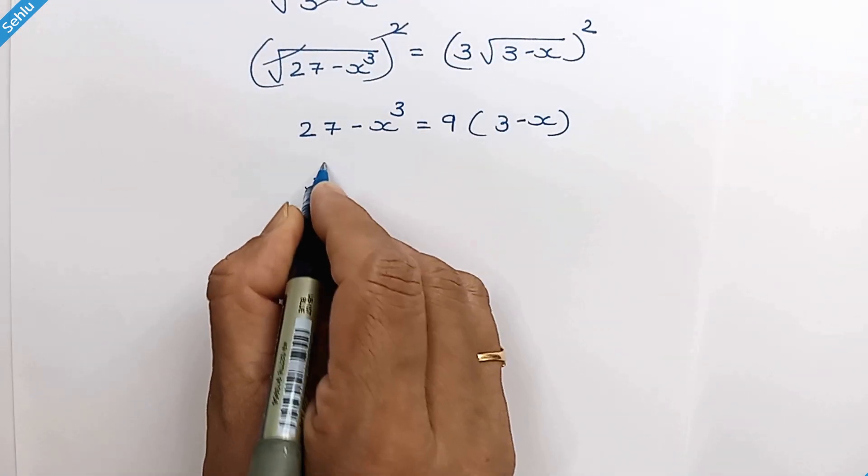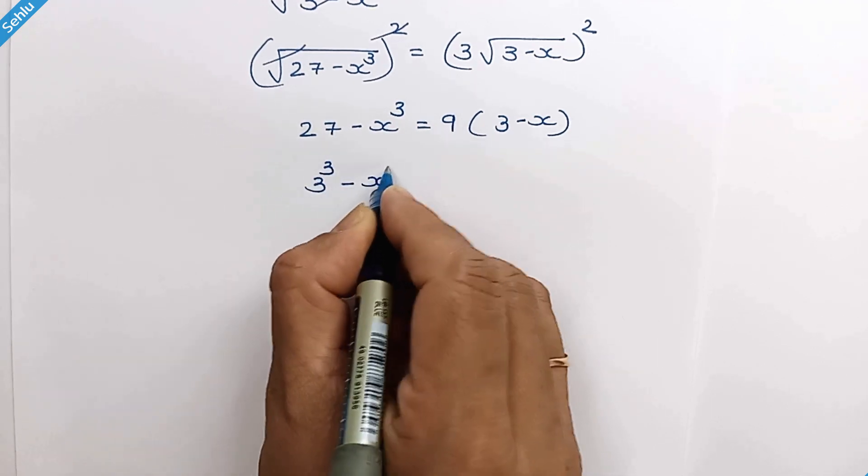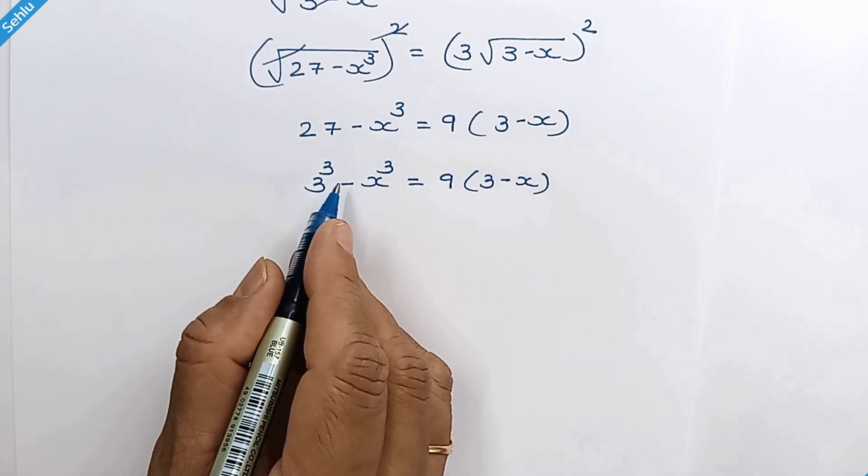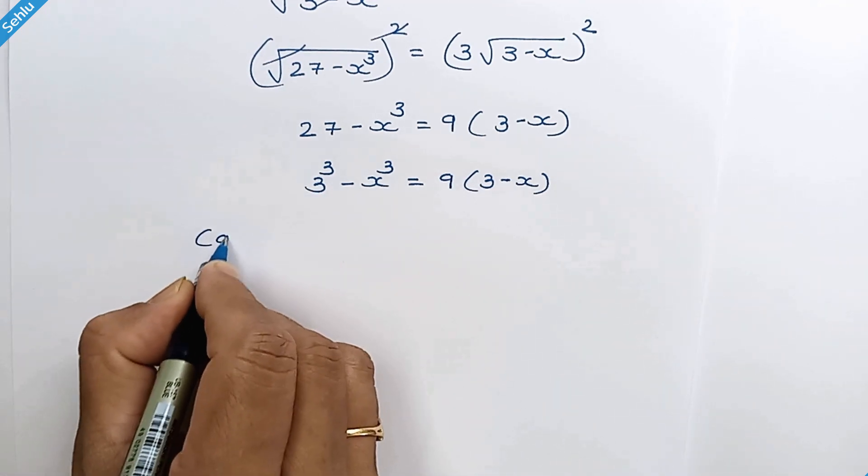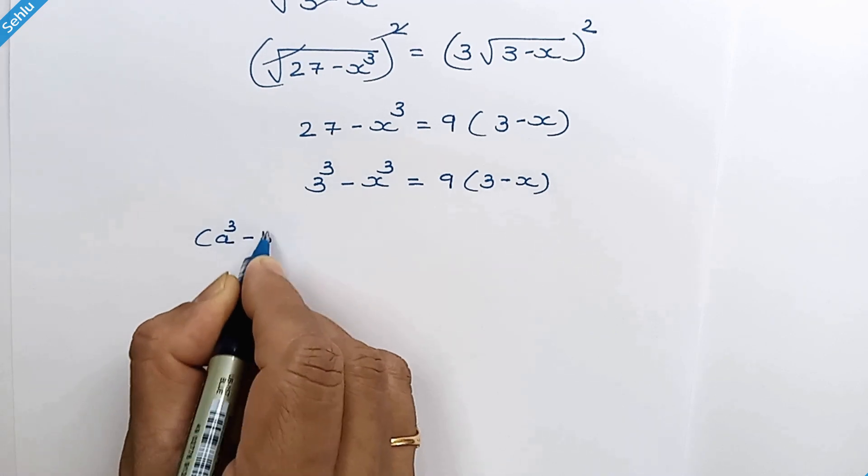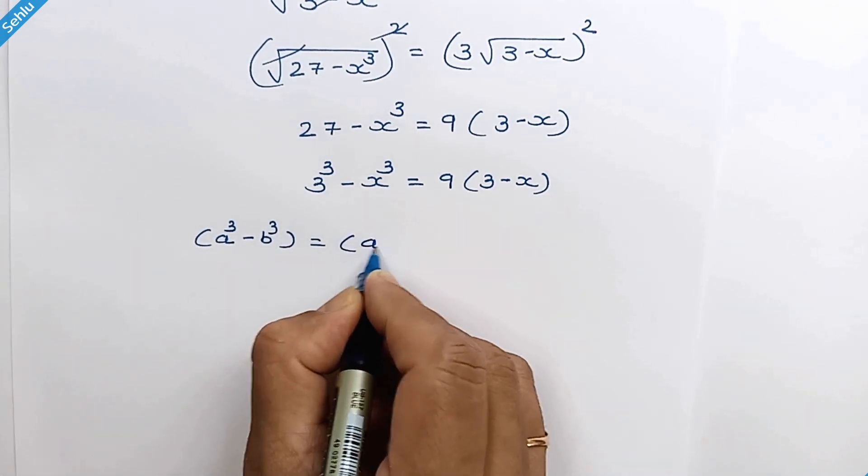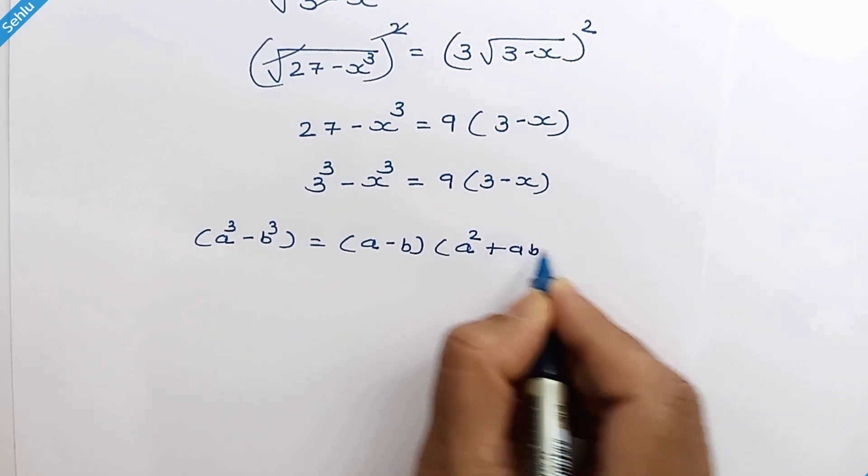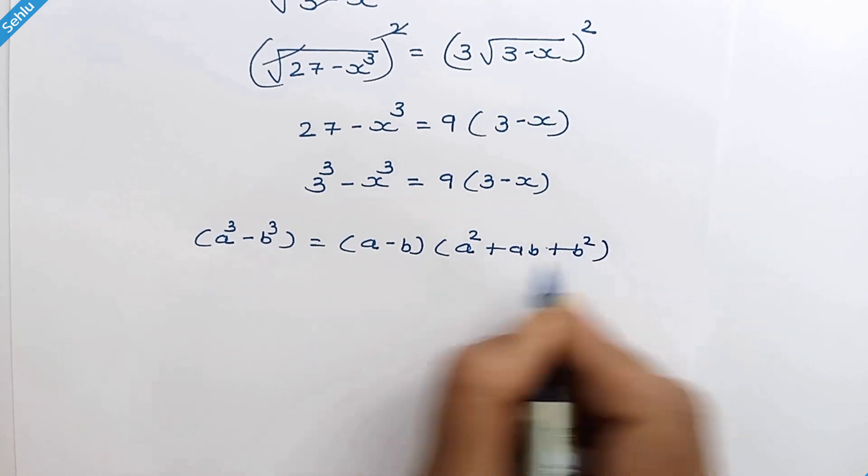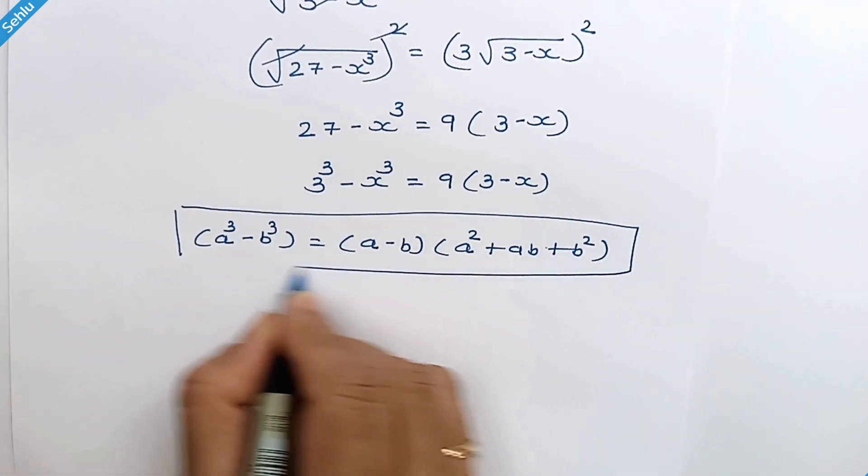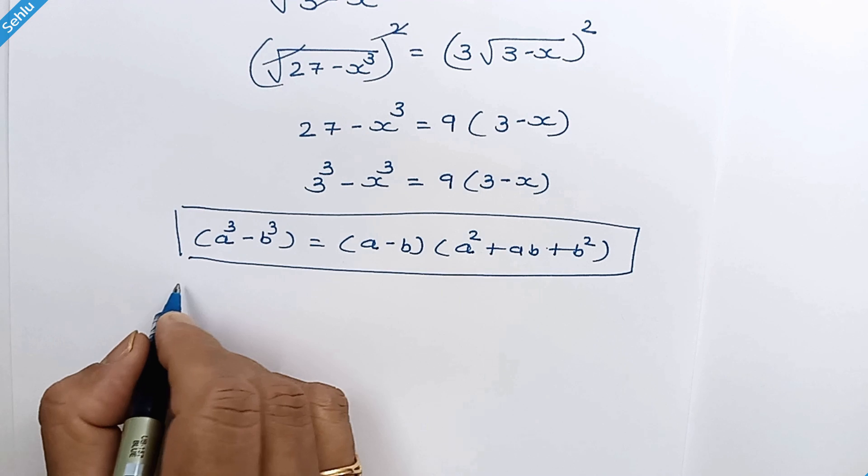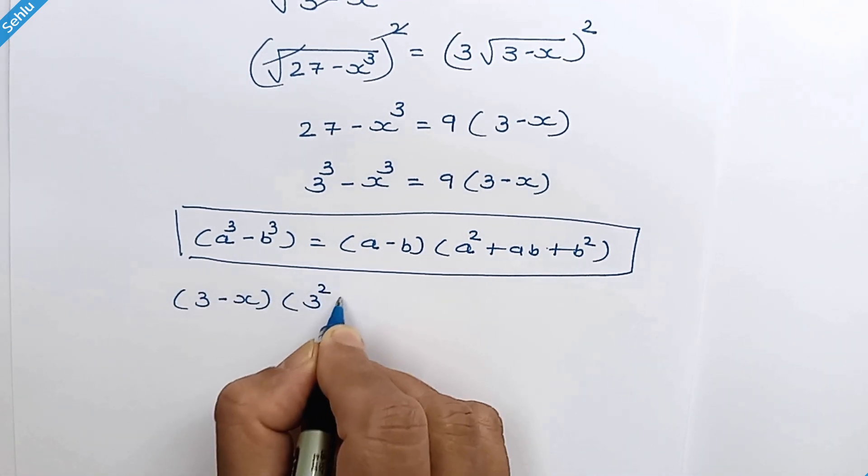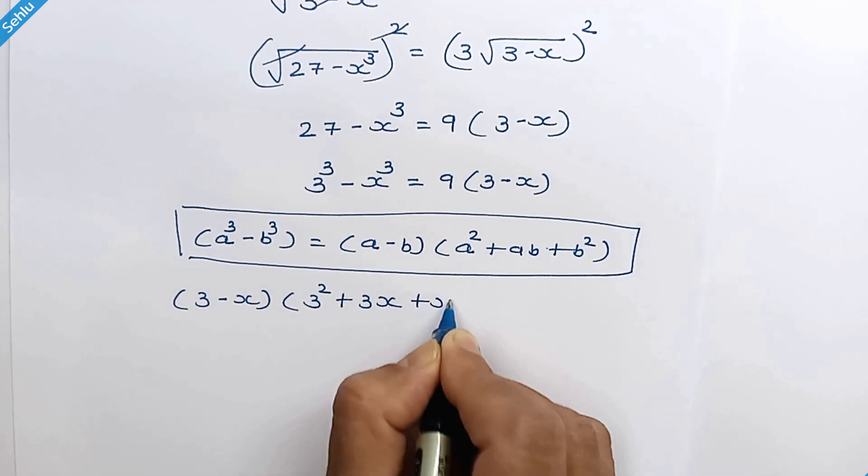27 is 3 cubed. Now here we can apply an identity which is a cubed minus b cubed. Then it can be a minus b times a squared plus ab plus b squared. So this part can be written as 3 minus x times 3 squared plus 3x plus x squared.